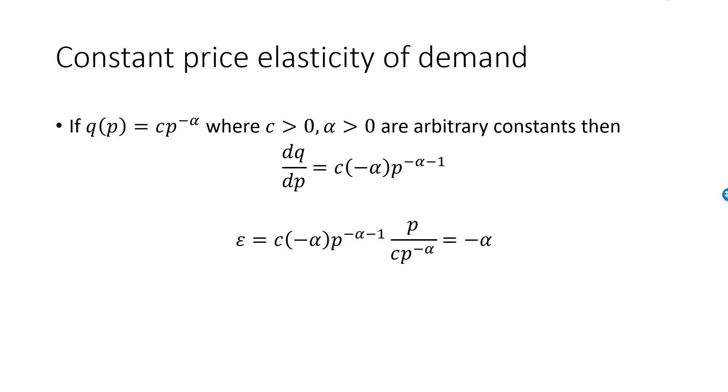We have three terms involving powers where the base is p. If you look at the first two, p raised to minus alpha minus one multiplied by p—remembering that this is really p raised to one—we add the exponents. Minus alpha minus one plus one is equal to minus alpha. The product of p raised to minus alpha minus one times p is equal to p raised to minus alpha, and this will cancel with the p raised to minus alpha in the denominator.